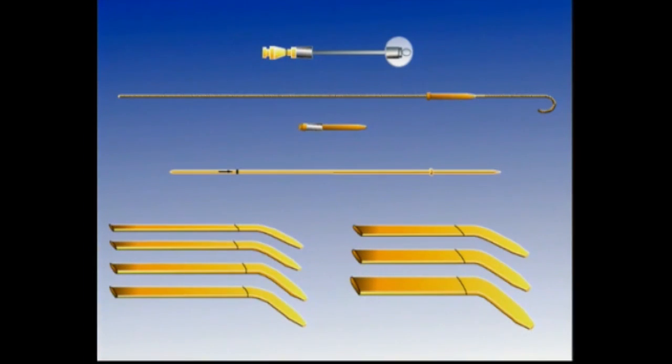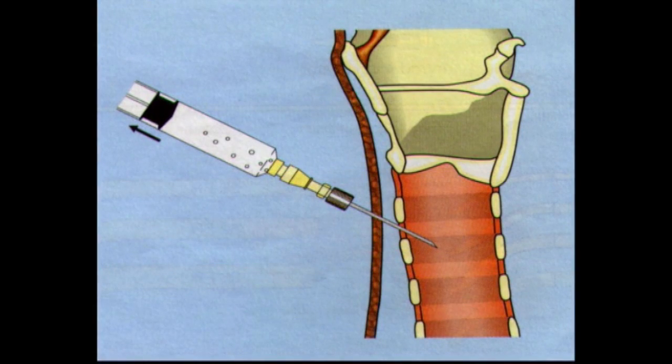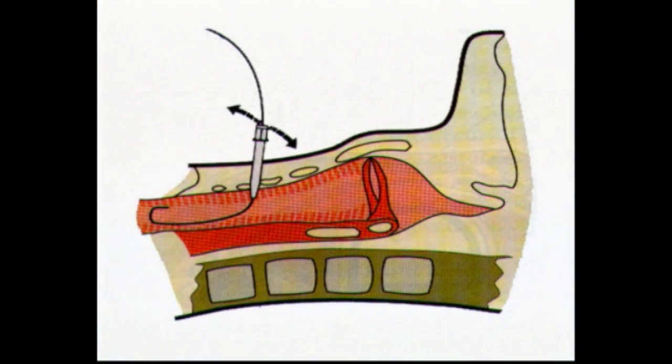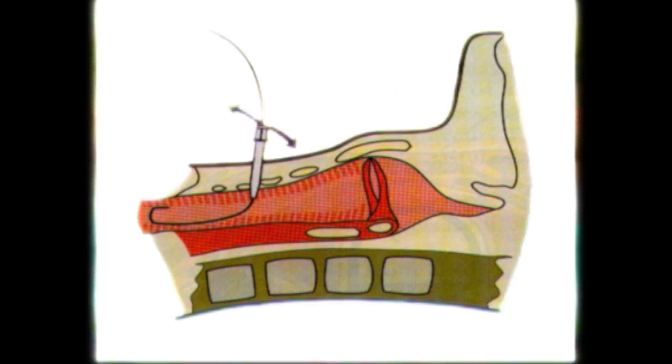There are two commonly used percutaneous techniques using either a guide wire and a series of dilators to obtain dilation of the tracheal stoma, known as the Siagla technique, or by using dilatational forceps, the Griggs technique.